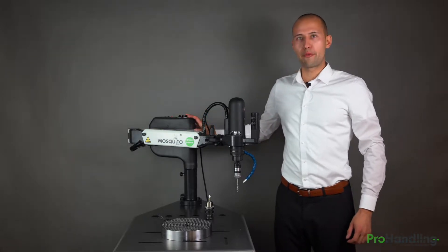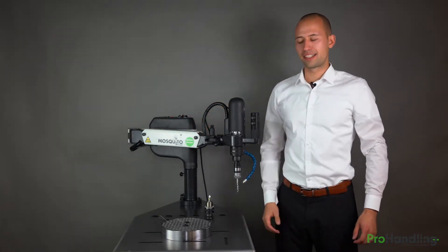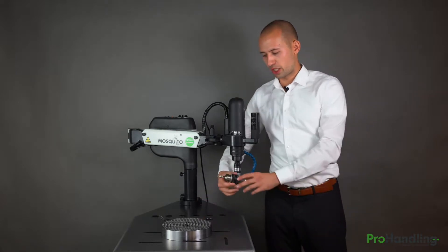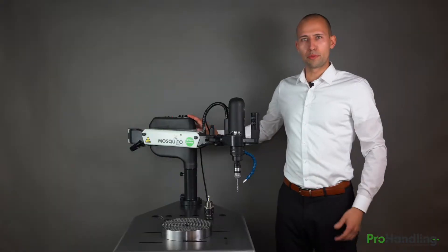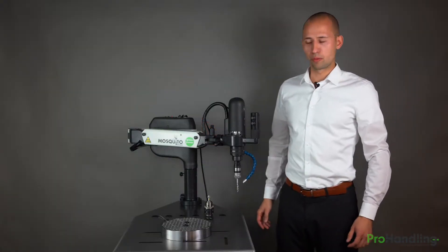With this machine you can tap from M2 to M14 in steel. You also can use this machine for countersink. Now I want to show you the most important specifications of the machine.